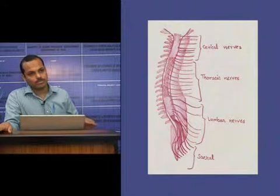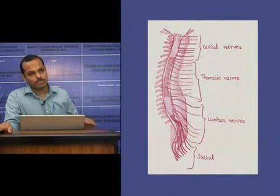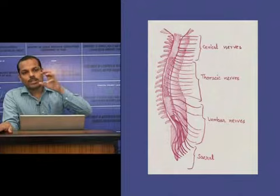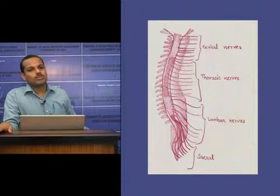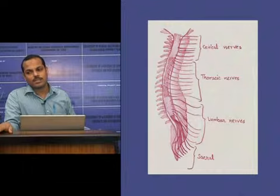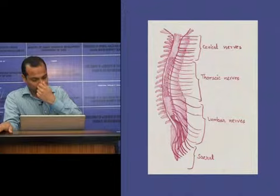At the lumbar and cervical regions there are two enlargements, where the cord gives rise to large nerves to the limbs. The spinal cord is shorter than the vertebral column, so the nerves arising from the lumbosacral and coccygeal regions do not leave the vertebral column at the same level as they exit the cord.